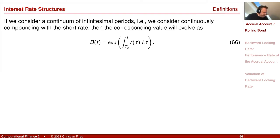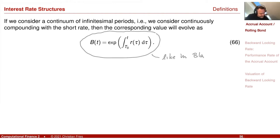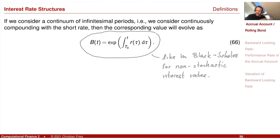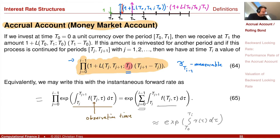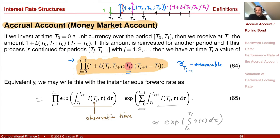If you go to a continuum of infinitesimal periods, this converges to the well-known accrual account — the object also used in the Black-Scholes model — with the addition that in the Black-Scholes model interest rates were not stochastic. So this object here is the discretized analog to the bank account used in the Black-Scholes model. The difference is that here we have a time discretization, which we need anyway on the computer, and we now allow stochastic interest rates.